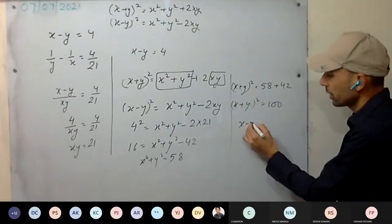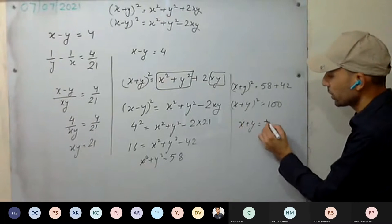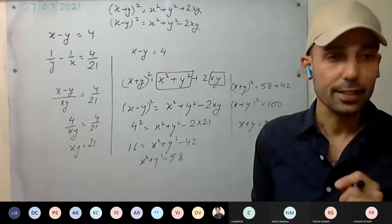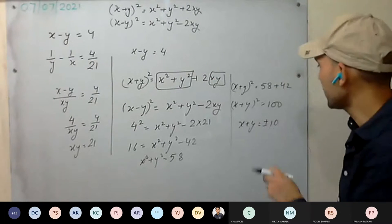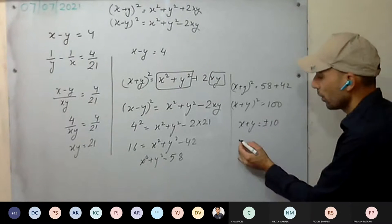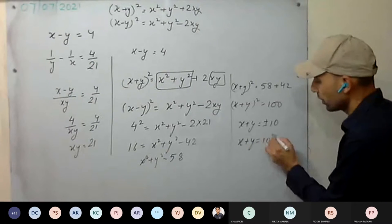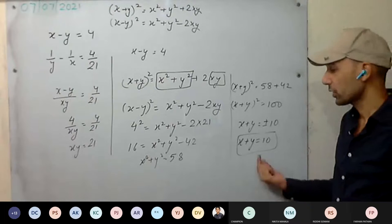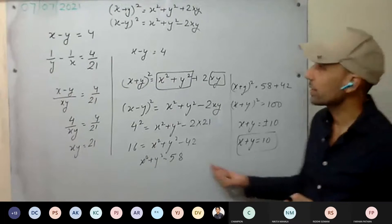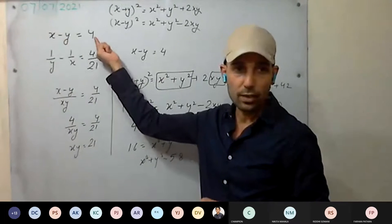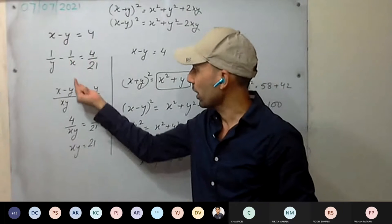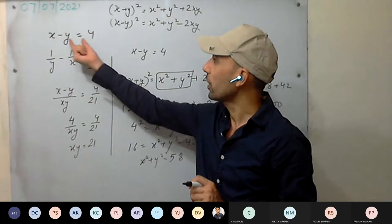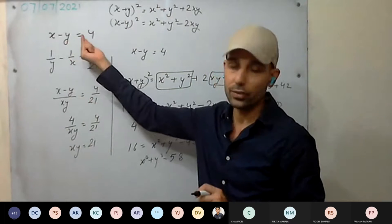Taking the square root, x plus y equals root of 100, which is plus or minus 10. Since x and y are both positive numbers, their sum will always be positive. So x plus y equal to 10. Now we have x minus y equal to 4 and x plus y equal to 10. Using these two equations we can solve for the values of x and y.